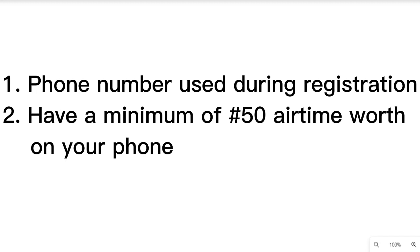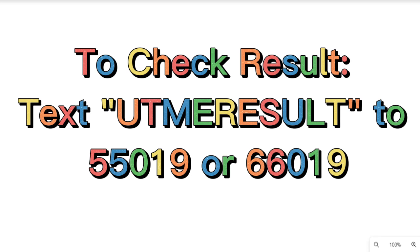Once you have met these two conditions, use your phone to text 'UTMEresults' (in one word) to either of these numbers: 55019 or 66019. Once you do that, wait for a moment and your result will be sent to you as an SMS.